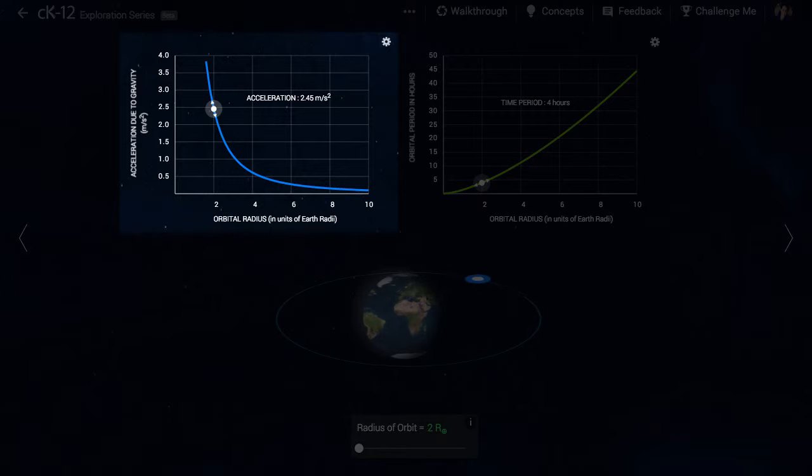As we can see in the left graph, the acceleration of the spacecraft caused by the pull of gravity falls steeply with distance from the center of the Earth. The relationship is an inverse square one, which means that the acceleration falls with the square of the distance. If the distance is doubled, the acceleration falls by a factor of 4. If the distance is tripled, the acceleration falls by a factor of 9.